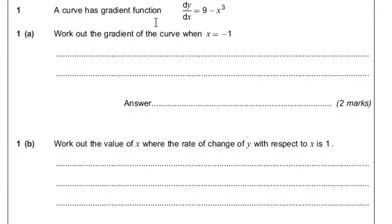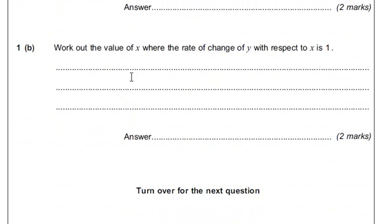The curve has gradient function dy/dx equals 9 minus 3x cubed. So, how to find the gradient? Well, if x is negative 1, then we just substitute the value into it. So, it's minus 1 to the power of 3 is minus 1. So, it's 9 minus minus 1, which is 10. So, for this question, it's 10. So, that's simple. Let's do the next question.